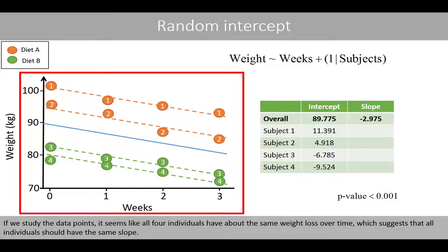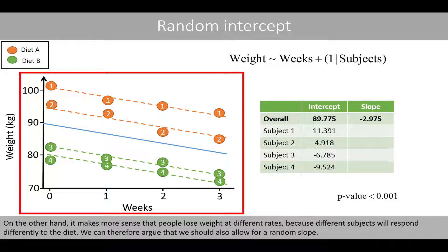If you study the data points, it seems like all four individuals have about the same weight loss over time, which suggests that all individuals should have the same slope. On the other hand, it makes more sense that people lose weight at different rates, because different subjects will respond differently to the diet. We can therefore argue that we should also allow for a random slope.